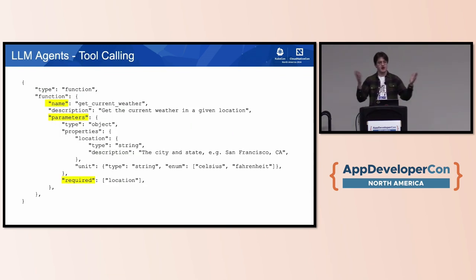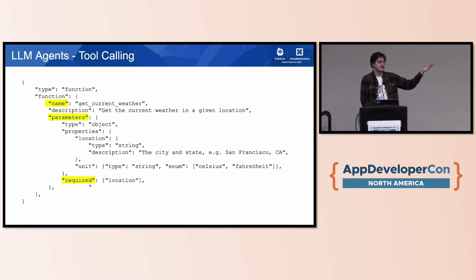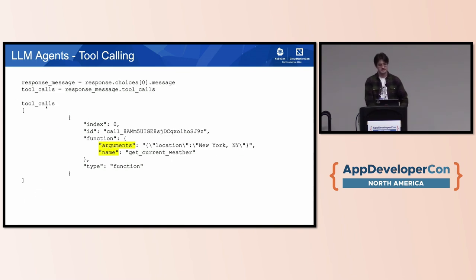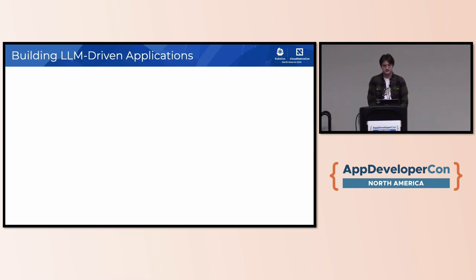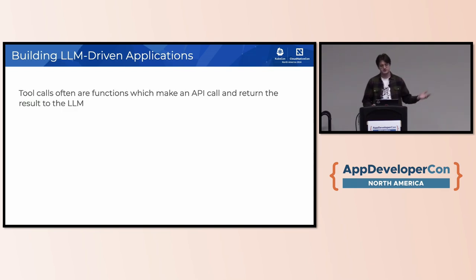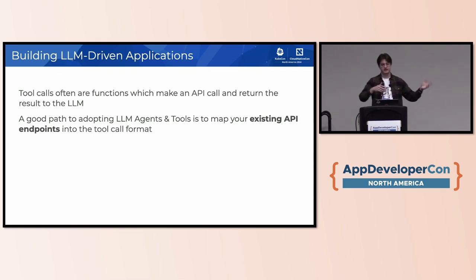To use tools, we have to describe them to the language model. The key things are: the function's name, its parameters — including the type of those parameters and which ones are required. This example from OpenAI's documentation is a function that tells you the weather in a city, where location is required. What you get back from the model is an array of tool calls it wants to make, telling you the function name and arguments that match the parameters you described. Often these tool calls are just functions that make an API call and return the result to the LLM.